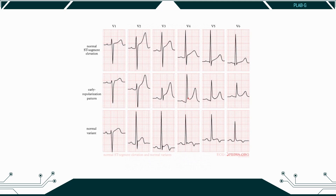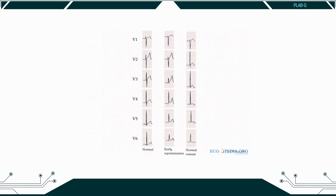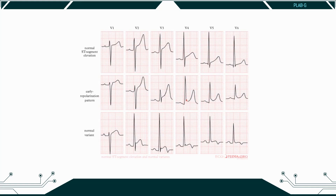A mimic of ST elevation is high takeoff, also known as benign early repolarization. High takeoff is where there is widespread concave ST elevation, often with a slurring of the J point. The J point is the start of the ST segment. It is most prominent in leads V2 to V5, usually in young healthy people and is benign. The best ways to differentiate it from myocardial infarction are: the ST segments are concave, most prominent in V2 to V5, have a slurred start, the ST elevation is usually minimal compared to the amplitude of the T wave, there are no reciprocal changes, and the ST segments do not change over time.